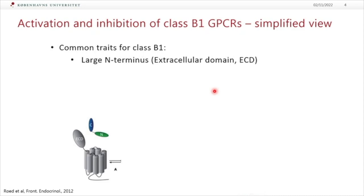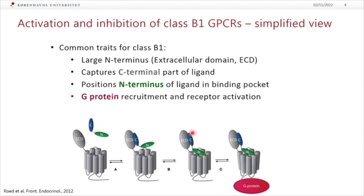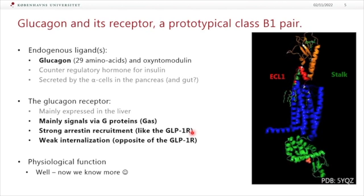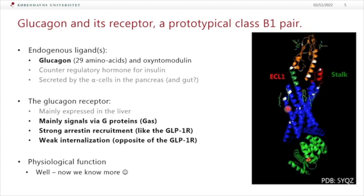There hasn't been much about receptor activation in this meeting, so I'm going to give a very brief overview. The way these class B1 receptors are activated is that they have a large N-terminus that captures the C-terminal part of the ligands, and that positions the ligand N-terminus with the ability to dock into the binding pocket. I brought some of the newer structures of the glucagon receptor where we know a lot about how glucagon — particularly the stalk region and extracellular parts — are important for glucagon binding.